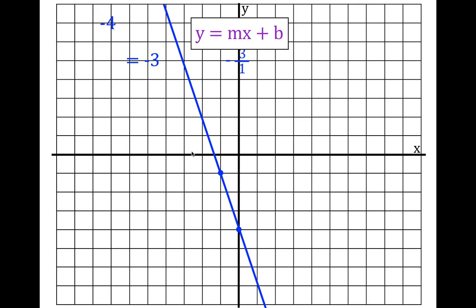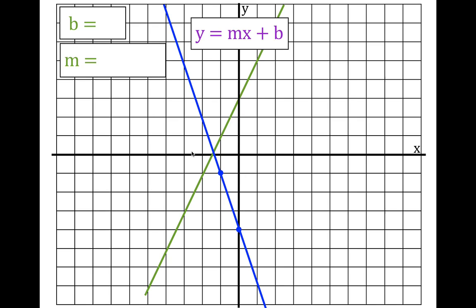The nice green line. Write down b equals, write down m equals. b is right here at plus three — count up from the origin: one, two, three. The line has a positive slope. The next crossing: we go up two and over one, so the rise is two, the run is one — two over one simplifies to two. Therefore the equation is y equals two x plus three.